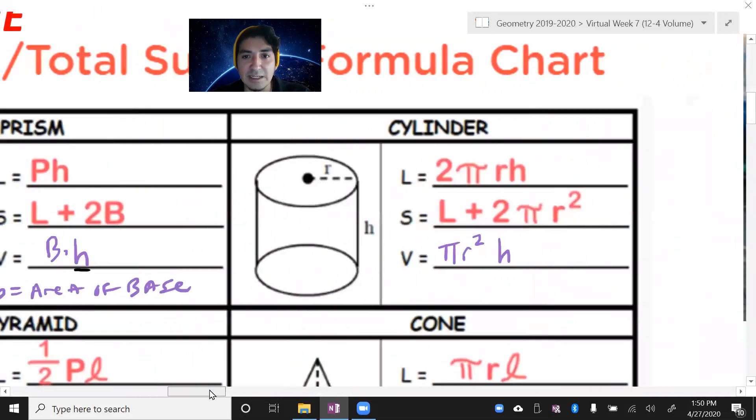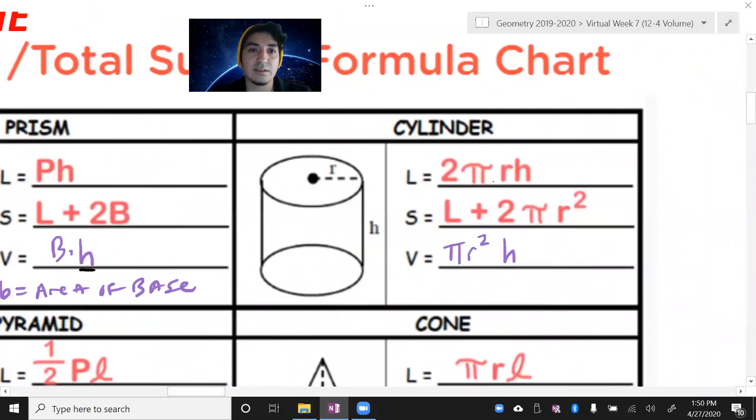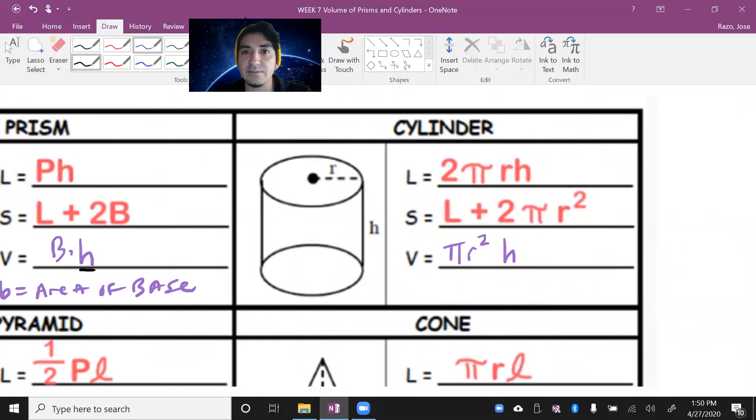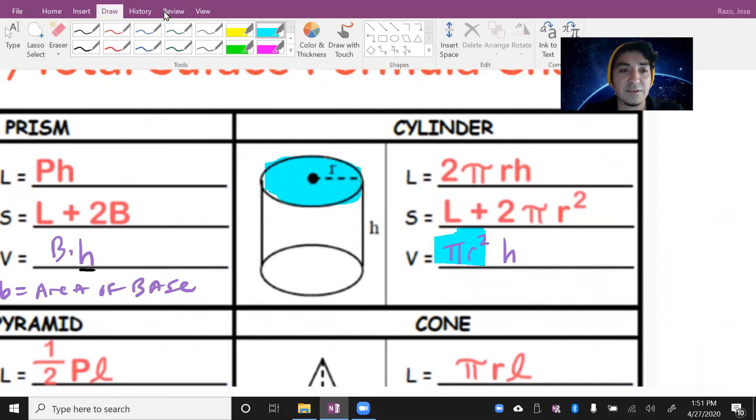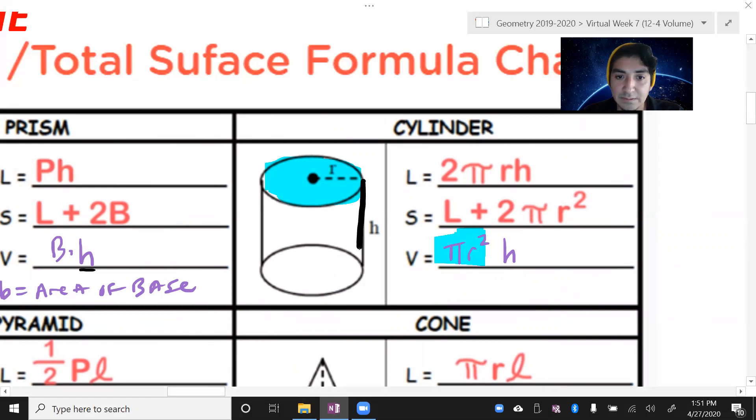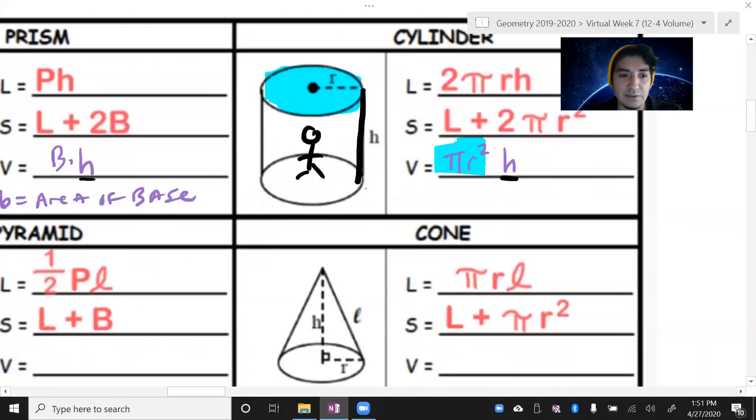For a cylinder, if we're trying to figure out what the height is, we're looking for the area of this circle, and that gives you pi r squared. As for the height, that's where the person's standing. That's the actual height of the whole entire cylinder. Pretty straightforward, it shouldn't be that bad.